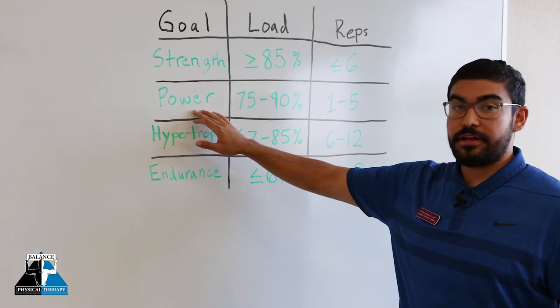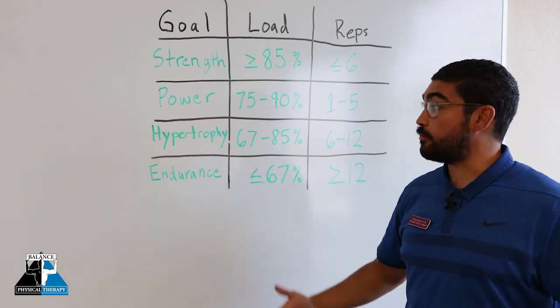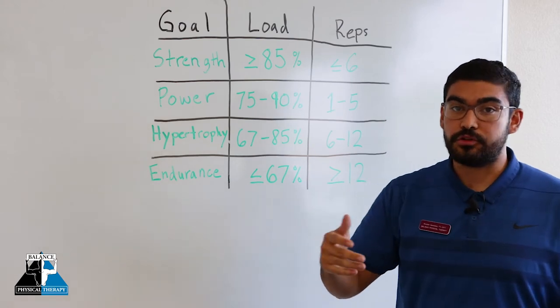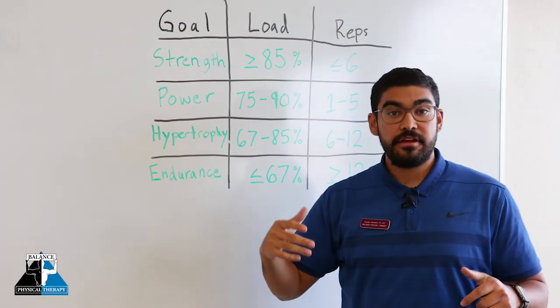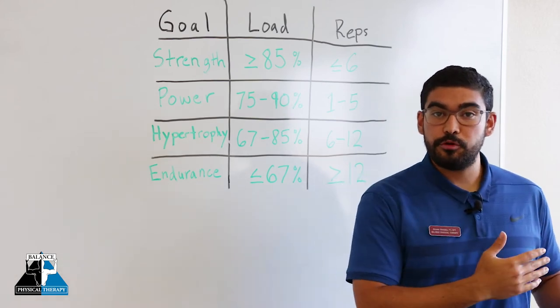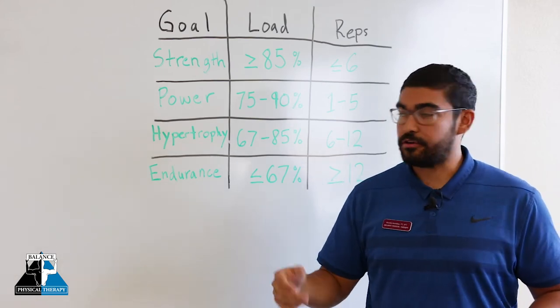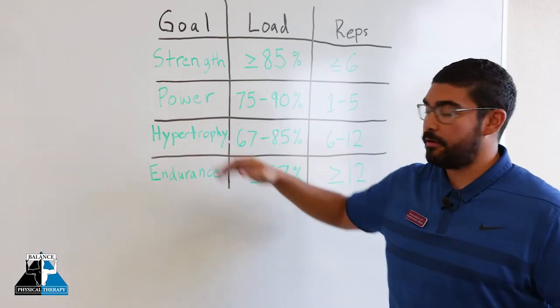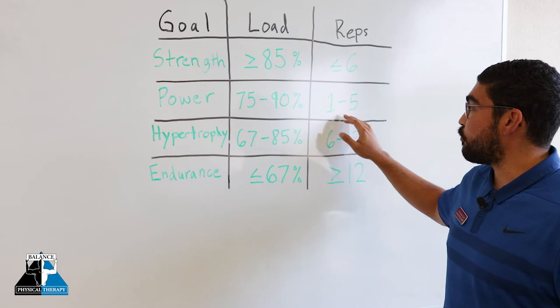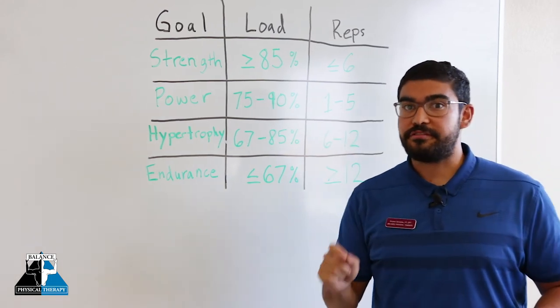Power is looking at the amount of load that we can do quickly. How does this translate to everyday life? If you are a golfer or a baseball player, being able to move quickly is important, right? So we want to train power. That's going to be at a relatively high load for low repetitions, focusing on moving fast.